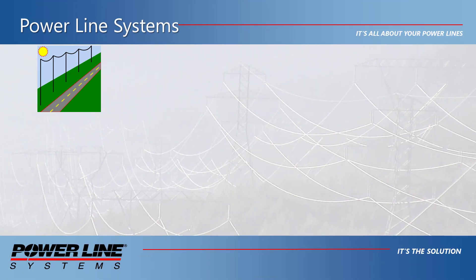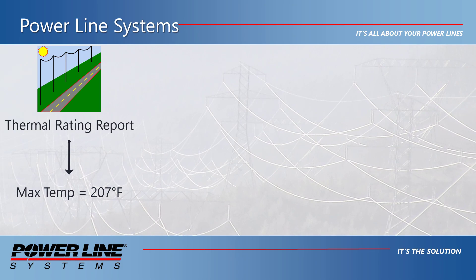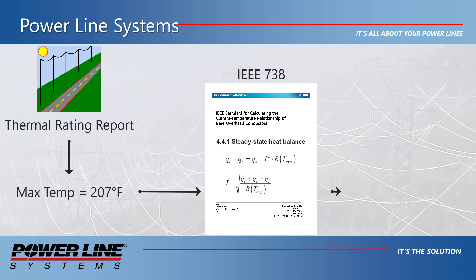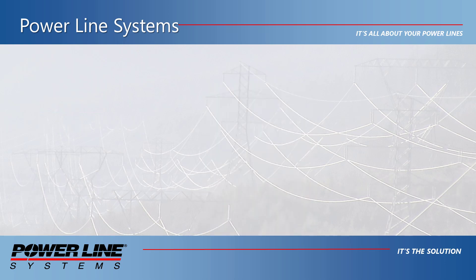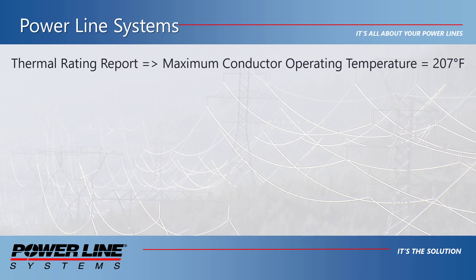Once this thermal rating temperature is found from the thermal rating report, you would convert that maximum operating temperature into an electrical current for the eight different seasonal rating conditions in our example. To start this discussion, let's assume we've performed a thermal rating on this line that resulted in a maximum operating temperature of 207 degrees Fahrenheit before a clearance violation occurs.